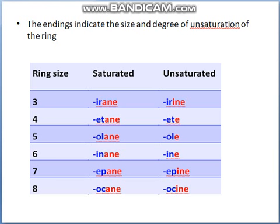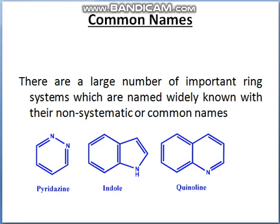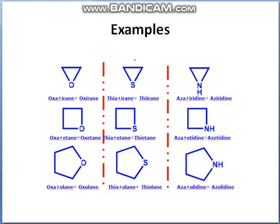Here we can see another table where ring size of three or four with saturation shows suffixes like -irane, -etane, -ithine, and so on. According to this system, heterocycles are named by combining the appropriate prefix with the stem from the above table. The letter 'a' is a prefix which can be omitted when necessary.